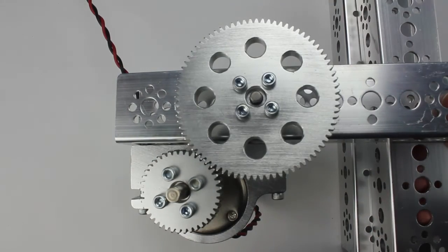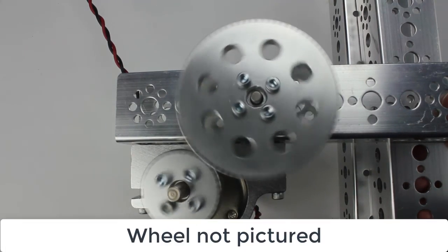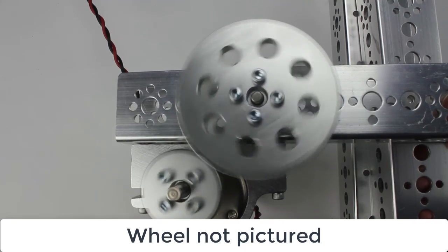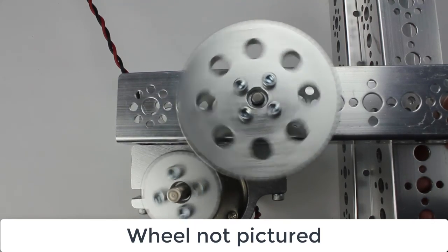A motor can have a gear connected to it with a wheel attached at the end of the gear assembly. The motor then indirectly turns the wheel.